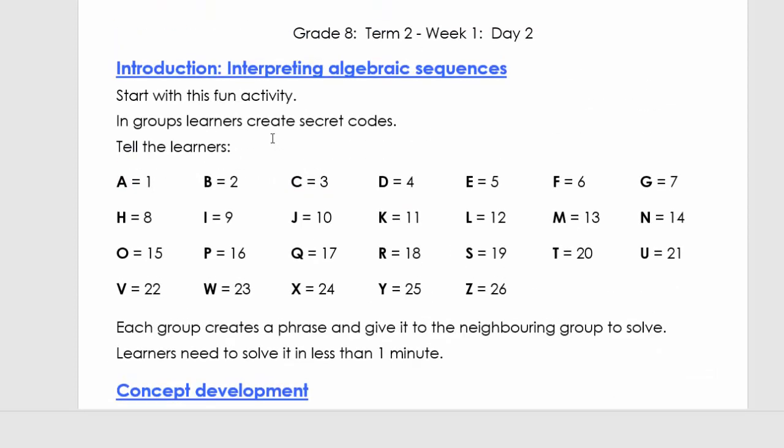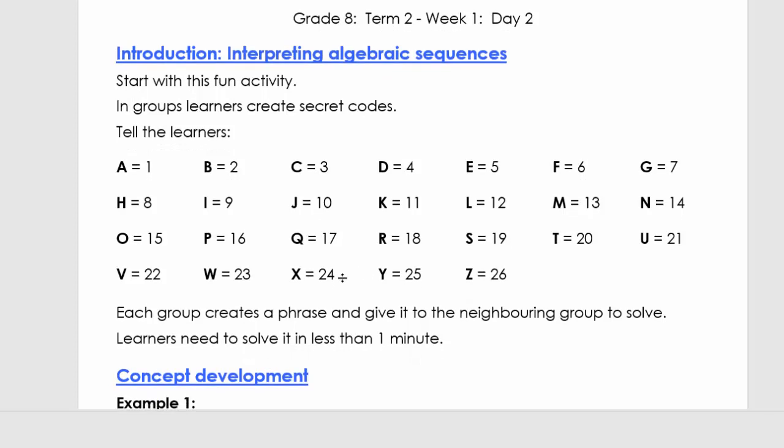Let's start with this fun activity where in pairs you create a secret code. Each of these alphabetical letters represents a number. In groups or by yourself, create a message that you're going to give to your friend, your parent, or in school context to the group next to you to solve. The learners need to solve this in one minute.